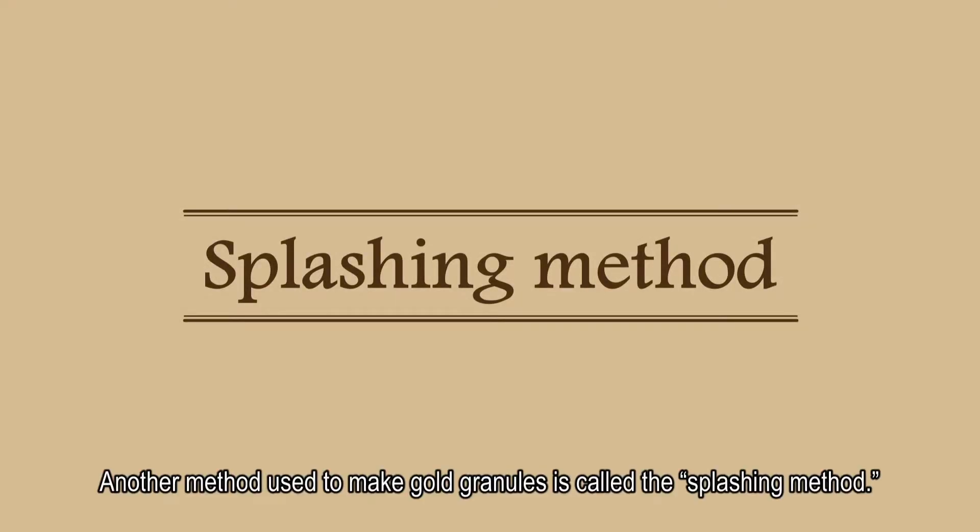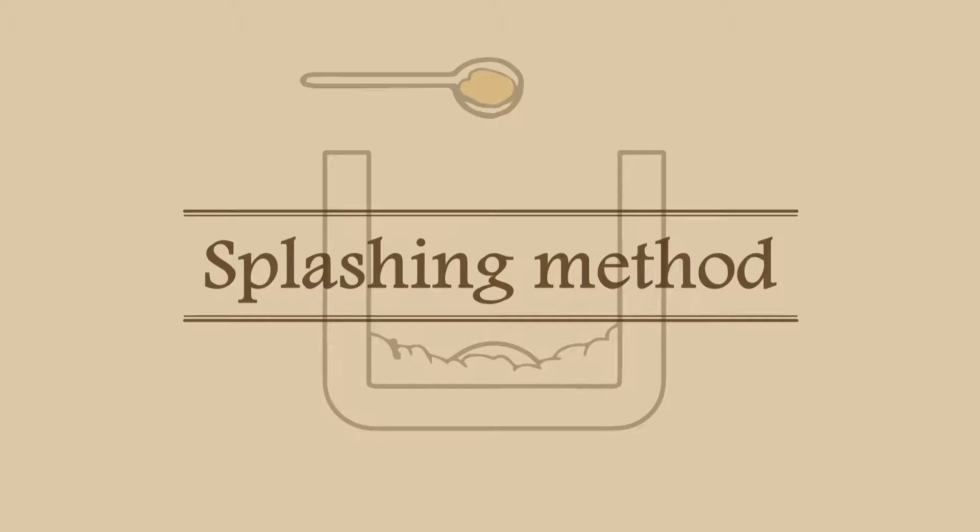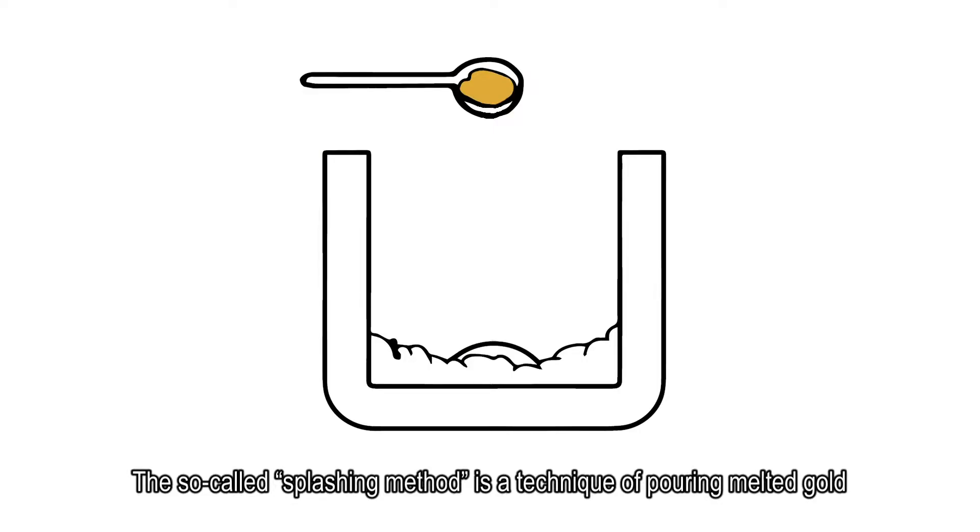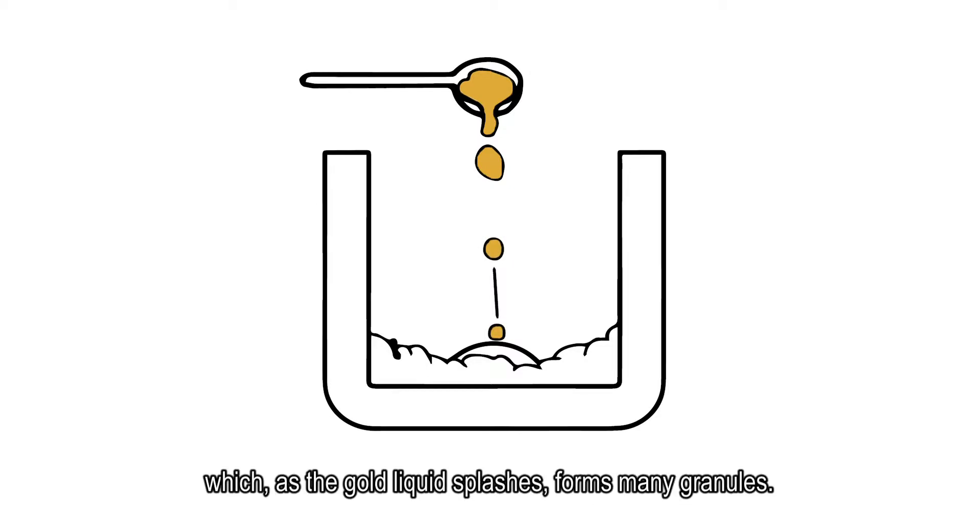Another method used to make gold granules is called the splashing method. The so-called splashing method is a technique of pouring melted gold onto a point of impact, which, as the gold liquid splashes, forms many granules.